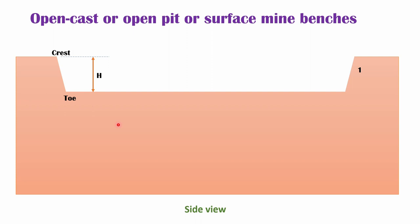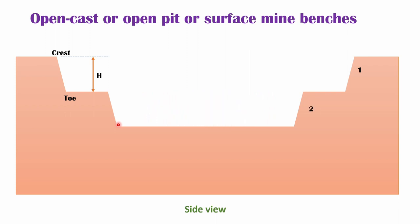So, for extracting that, we have to open that bench like this — that is bench number two. In a similar fashion, for extracting more rock mass, we have to open bench number three below bench number two like this. Likewise, the surface mine benches are formed.